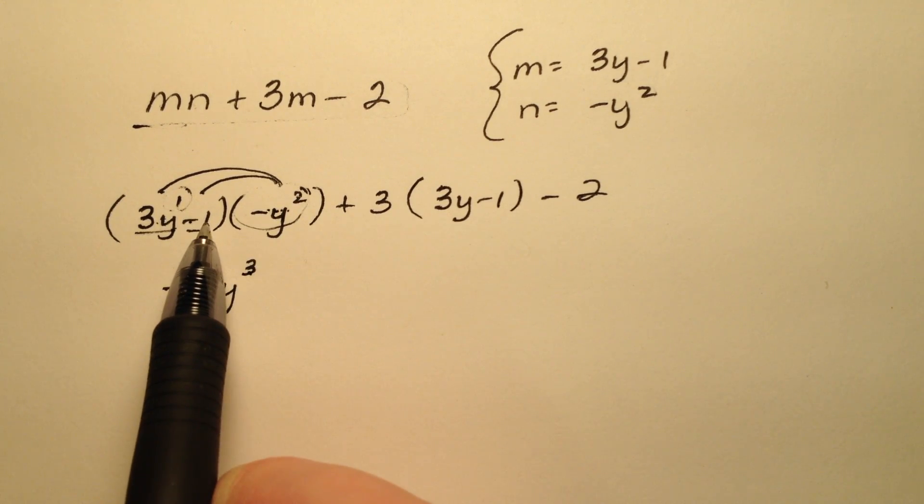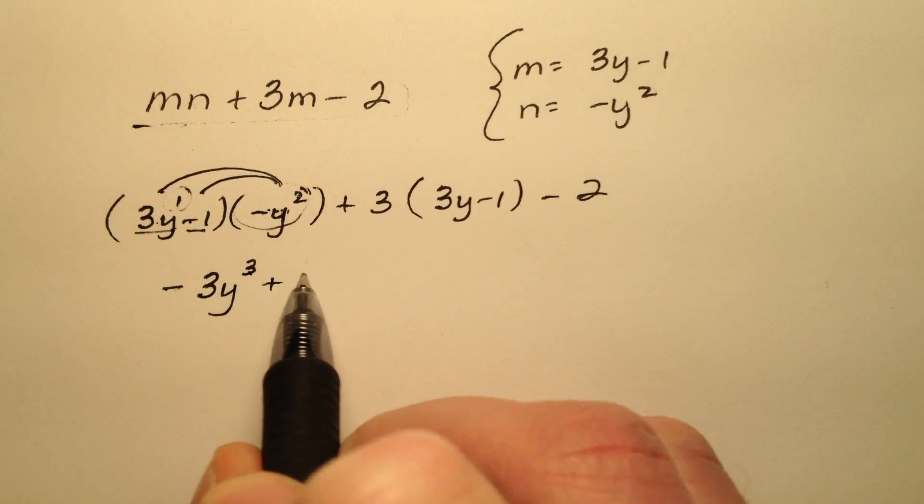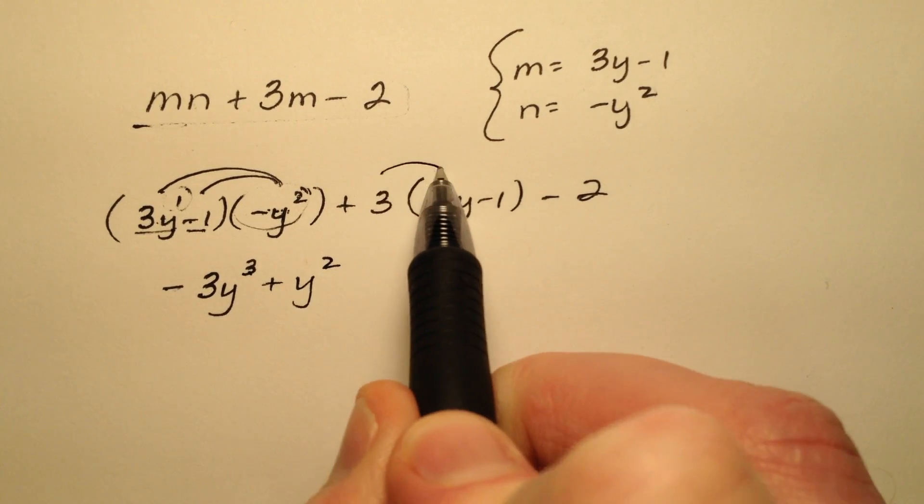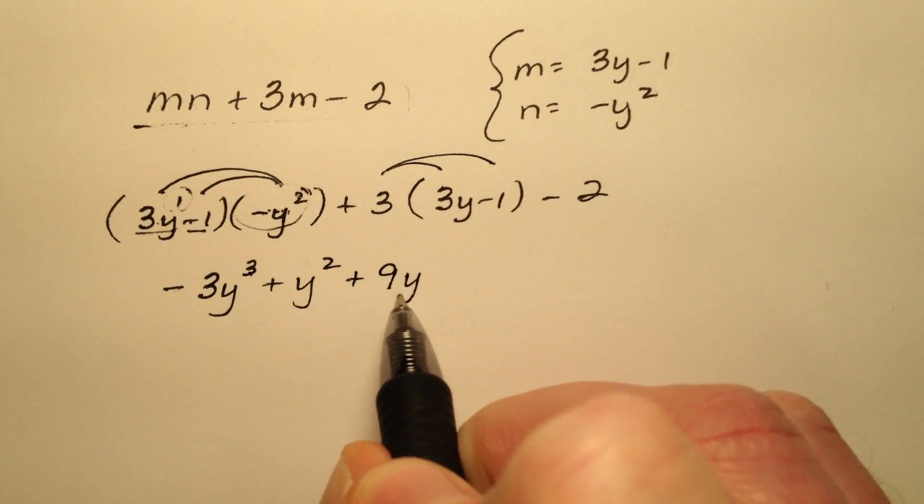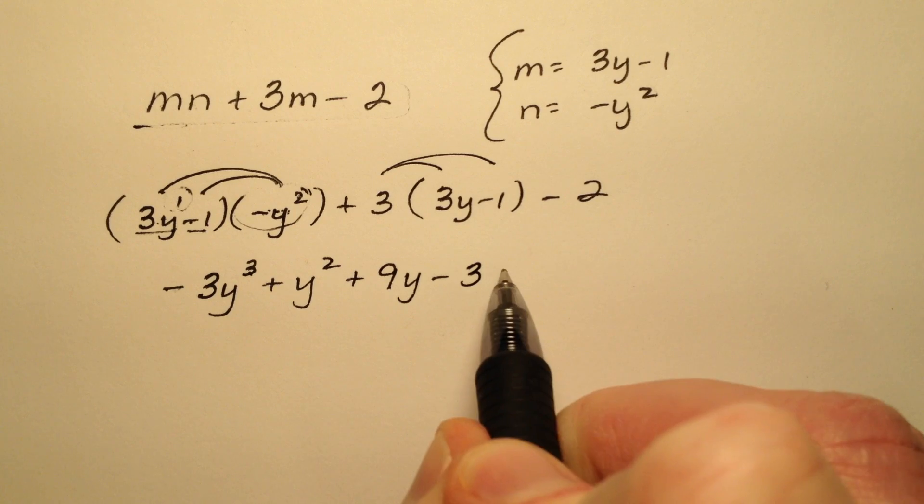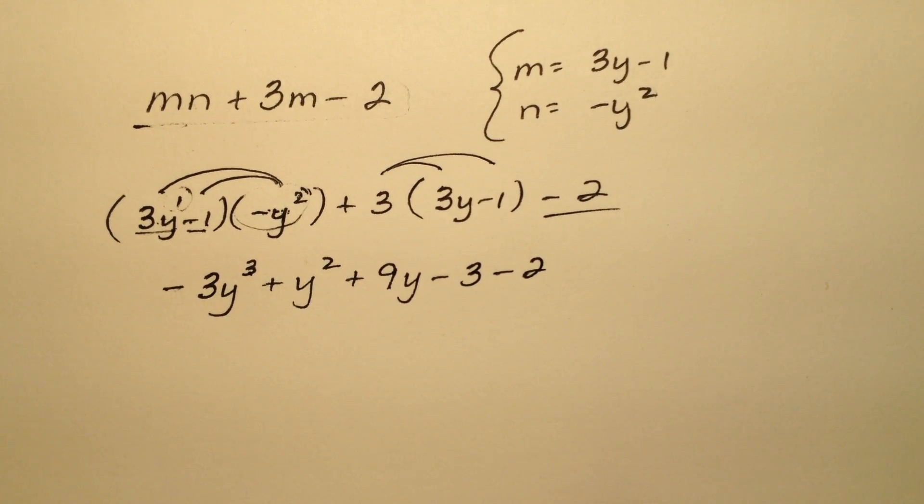Then I have negative 1 times negative y squared, so that'll be plus y squared. We'll do another distribution here and get plus 9y minus 3, and then this minus 2 comes along for the ride.